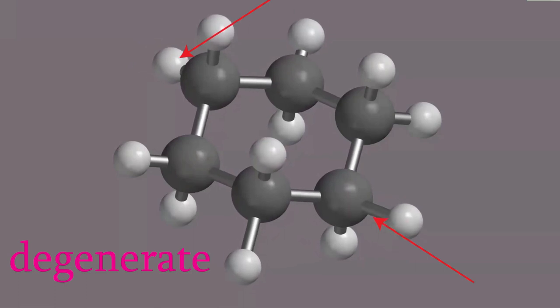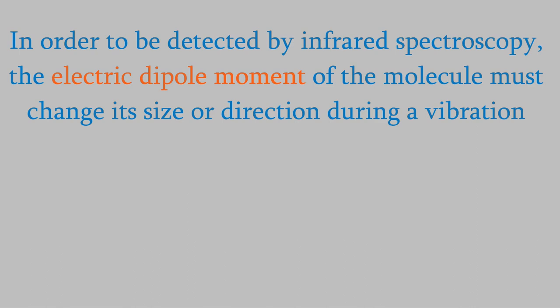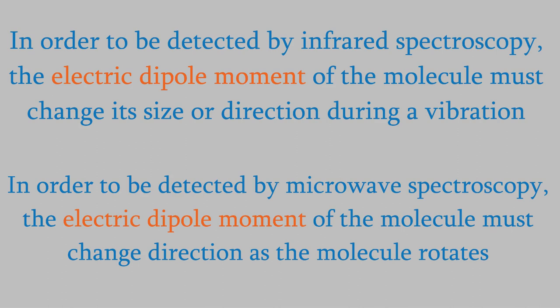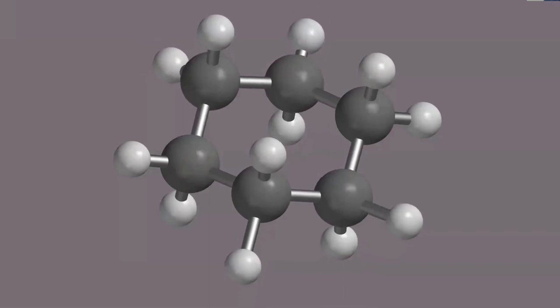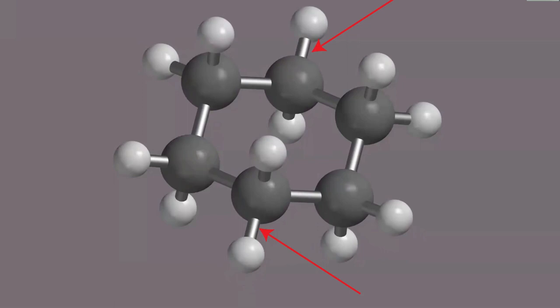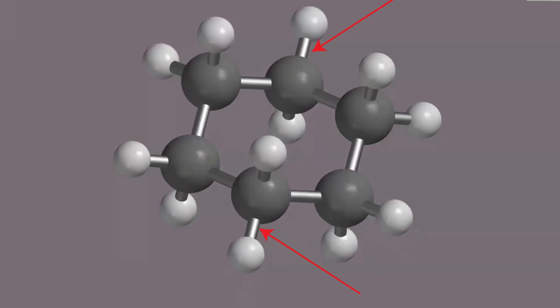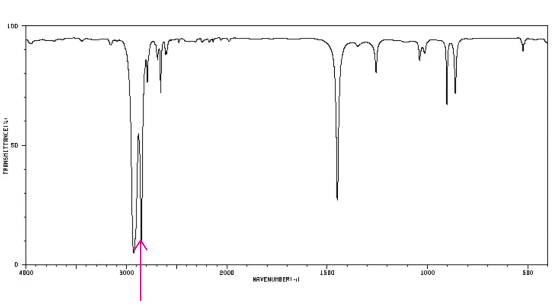Another important thing to know about vibrations is that in order for them to appear in an IR spectrum, the vibration must cause the electric dipole moment of the molecule to change its size or direction. There was also a similar rule for rotations — in order to appear in a rotational spectrum, the rotation had to cause the electric dipole moment of the molecule to change. Think about that as you watch this vibration. Since these two bonds go in opposite directions — one gets smaller as the other gets longer — it causes the distribution of charges around the center of the molecule to change. In other words, the electric dipole moment will change its size and direction, so this vibration will produce a peak in an IR spectrum.